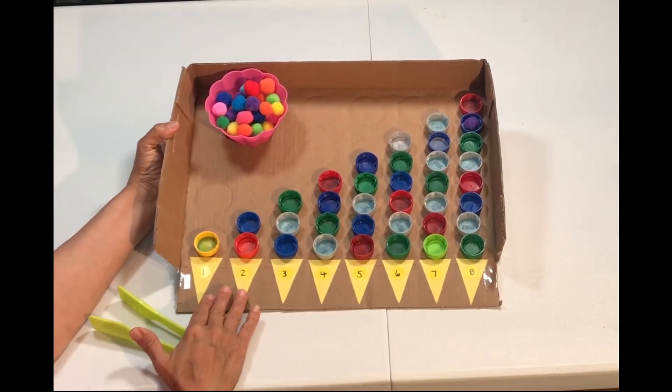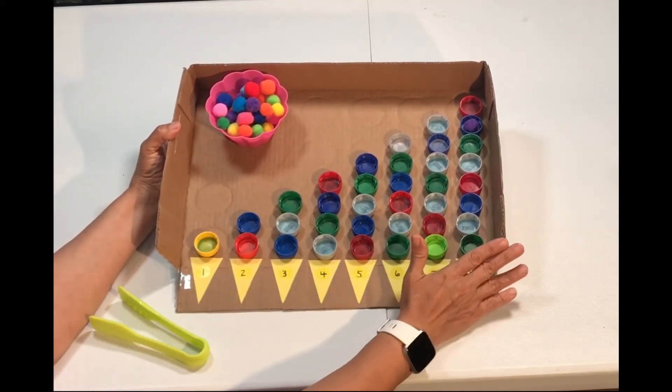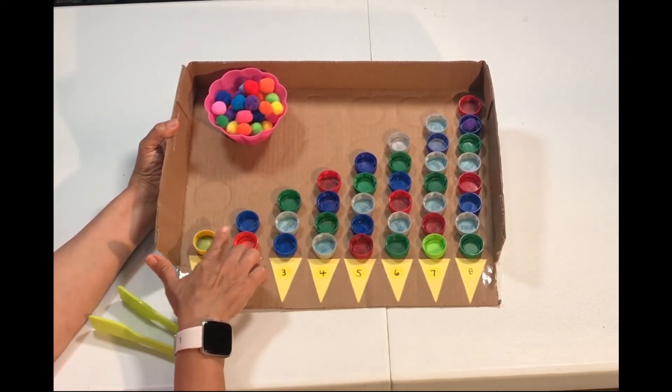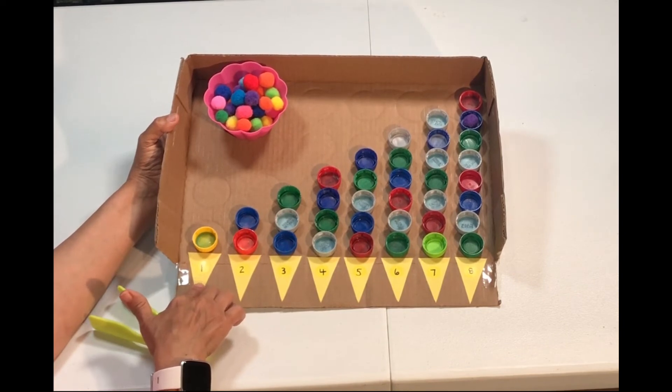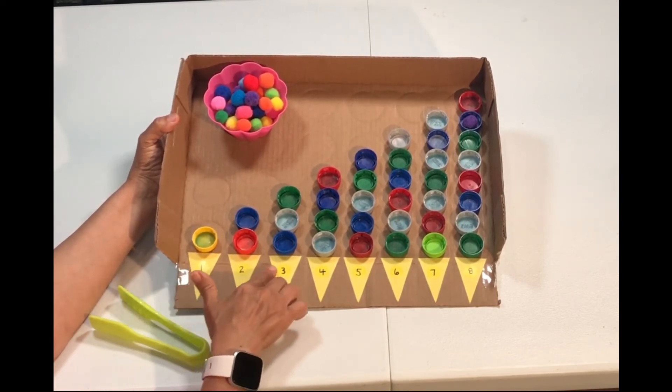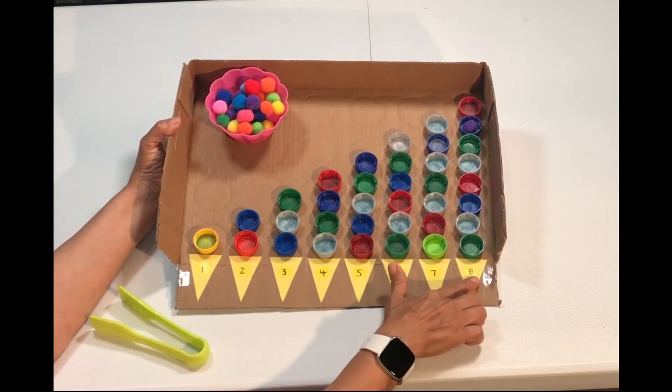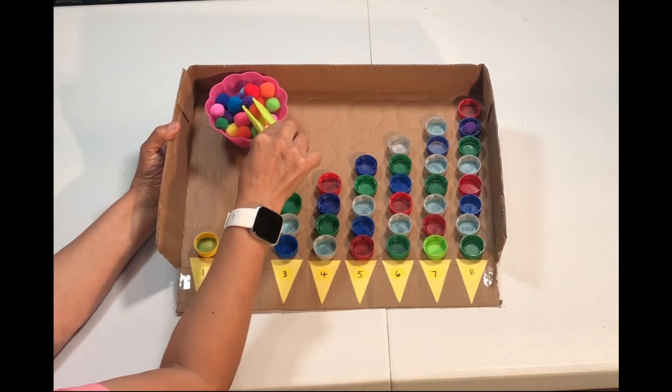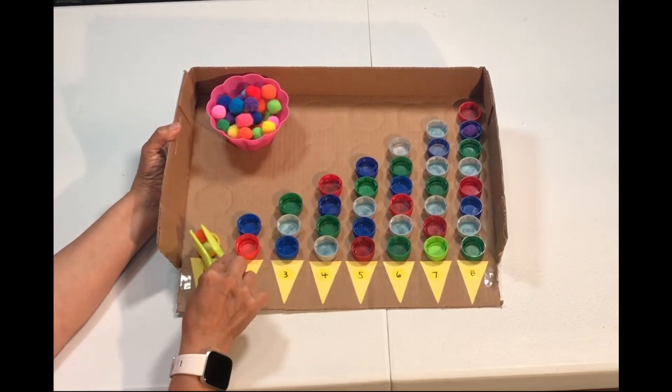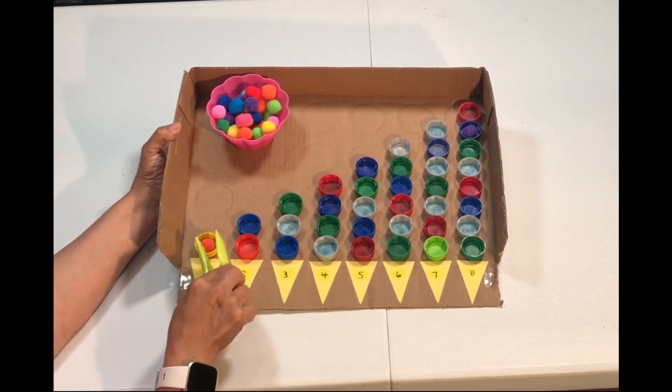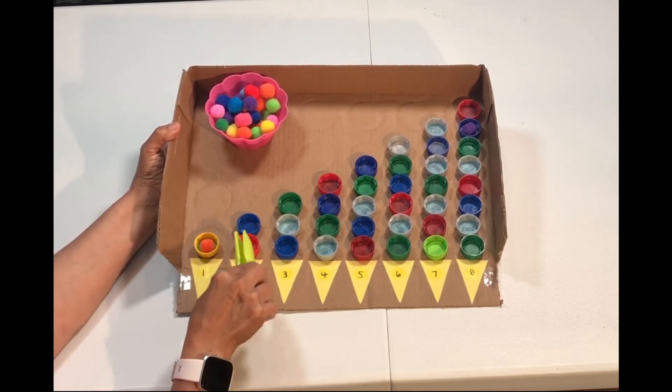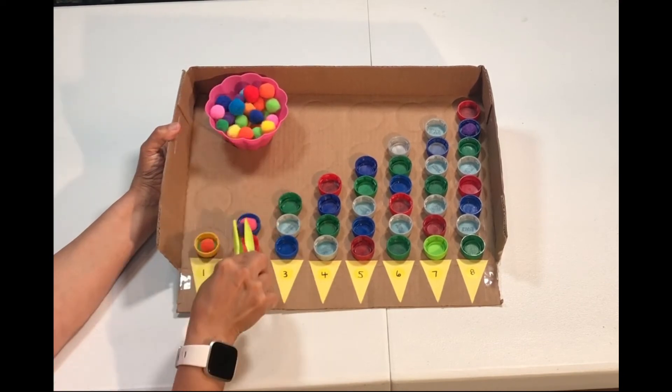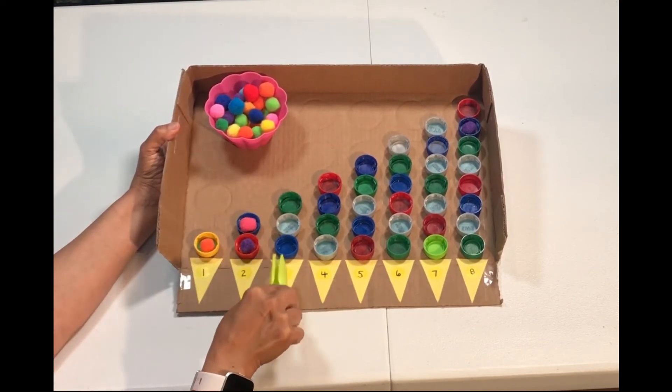For this activity, I put together, this is the lid from a box. I have some bottle caps and I cut like the shape of an ice cream cone and I put numbers one through eight. What my grandson is going to do is get a pom-pom. This is one to one correspondence: one. Then we're going to do two. Then three and so on.